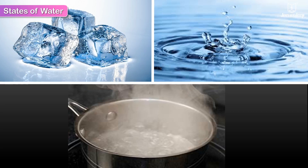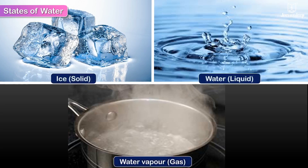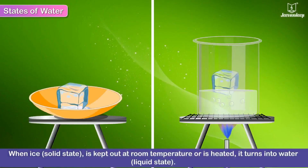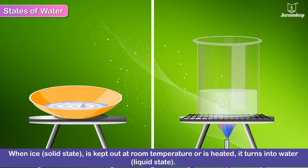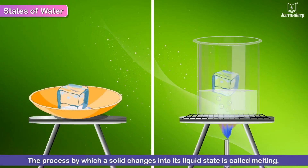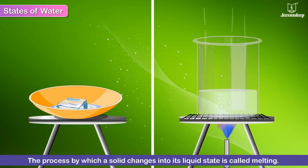States of water: water is present in three states — solid, liquid, and gaseous. It can interchange its state upon heating or cooling. When ice (the solid state) is kept out at room temperature or is heated, it turns into water (the liquid state). This process by which a solid changes into its liquid state is called melting.